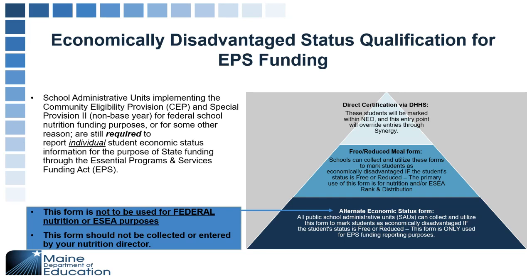Someone asked about the three-year period for EPS percentage — EPS does not have a three-year period. That's ESEA and nutrition, specifically special provision 2, which collects a base year and uses that percentage for the following three years. That's why we have an annual collection of alternate economic disadvantage status for EPS — we don't do a three-year period.